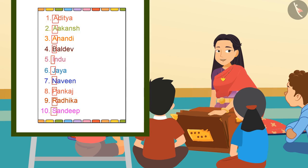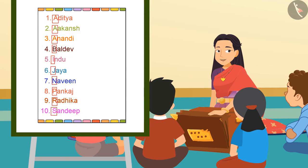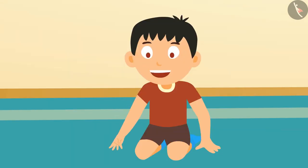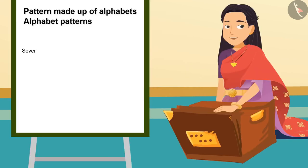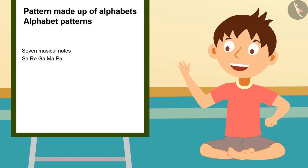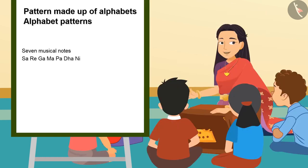Writing all names alphabetically is a kind of pattern, so we can say this is a pattern made of alphabets. Are there any more examples of alphabetical patterns? Yes, of course! You all know about the seven musical notes, right? Sa, Re, Ga, Ma, Pa, Dha, Ni. These musical notes are also made up of alphabets. Come, let's make some patterns using musical notes today.